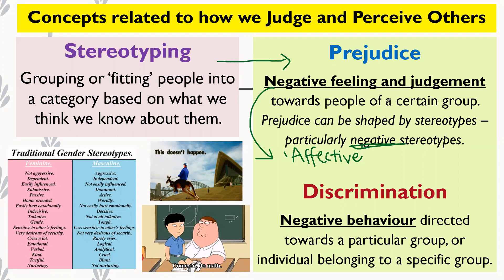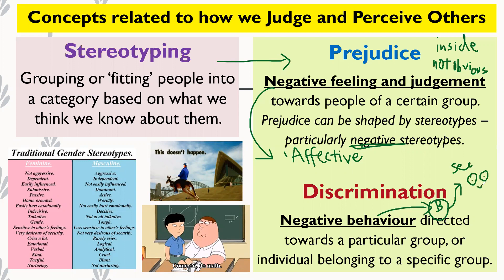Prejudice is a negative feeling or judgment that you hold inside — it's internal and might not always be obvious from the outside. When it becomes obvious is through discrimination. Discrimination is taking those negative feelings and judgments you once held inside and translating them into actual behavior — the behavioral component of the tri-component model. People can actually see that negative behavior occurring. When you project negative behavior towards a particular group or an individual from that group, you are showing discrimination.